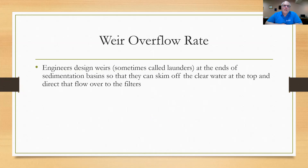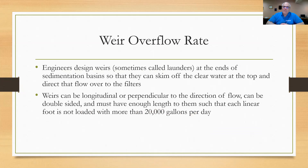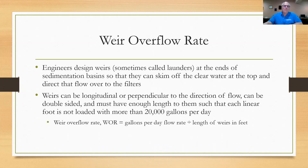Let's move on to weir overflow rate. Engineers sometimes call weirs 'launders' when they're installed in your basins. The launders at the ends of sedimentation basins skim off the clear water at the top and bring it over to the filters — typically the top inch or two of water. Weirs can be longitudinal or perpendicular to the direction of flow and can be double-sided, but they must have enough length so that each linear foot of launder is not loaded with more than 20,000 gallons per day. So the weir overflow rate (WOR) is simply the gallons-per-day flow rate divided by the length of weirs in feet.